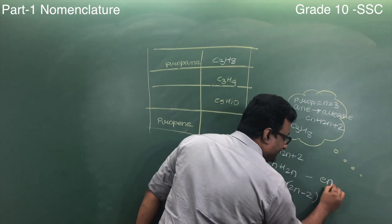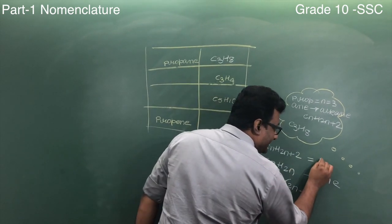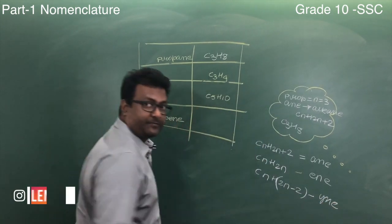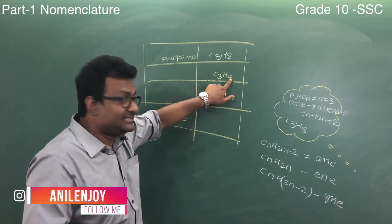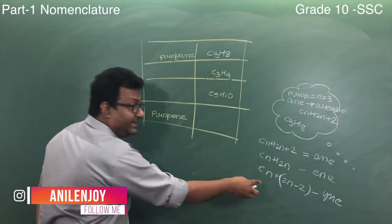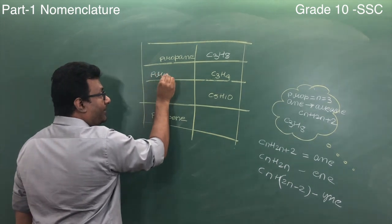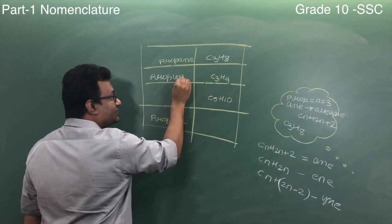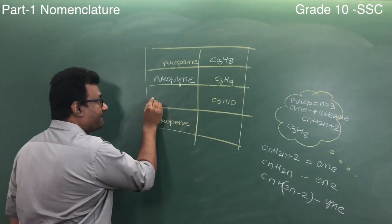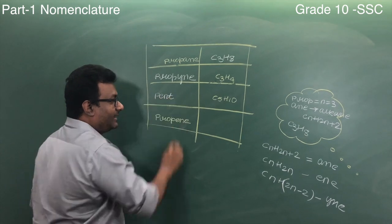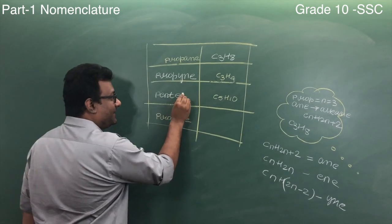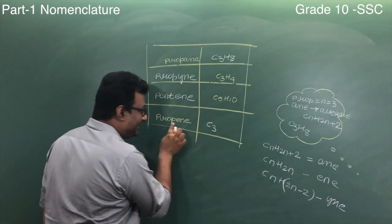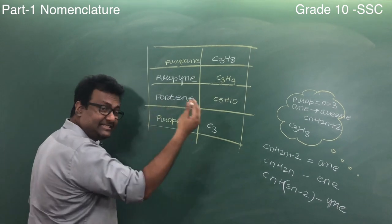So this is what: double is 6, 6 minus 2 is 4. So this is alkyne. So 3 is prop, 3 is prop, and double minus 2 is yne. Five is pent, double is ene. Pentene. Propene. Propyne. C3, prop is 3, ene is double. It's 6.